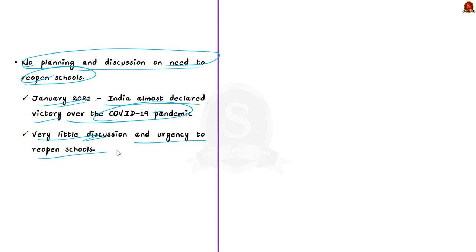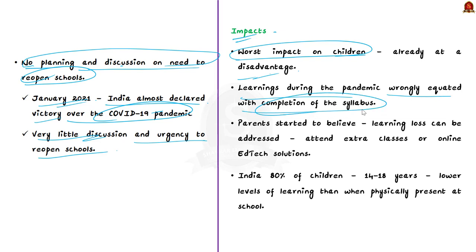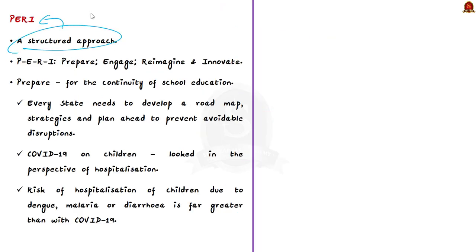The closure of schools had the worst impact on children already at a disadvantage. Learnings during the pandemic were wrongly equated with completion of the syllabus — even parents believed learning loss could be addressed through extra classes or online EdTech solutions. As a result, 80% of children aged 14 to 18 years reported lower levels of learning than when physically at school.